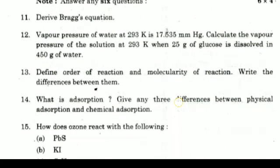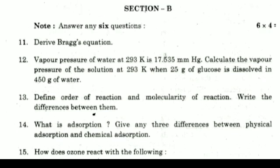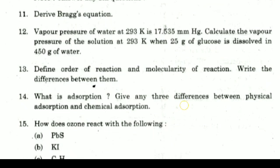Twelfth one: Vapor pressure of water at 293 K is 17.535 mm Hg. Calculate the vapor pressure of the solution at 293 K when 25 grams of glucose is dissolved in 450 grams of water. And thirteenth one: Define order of reaction and molecularity of reaction. Write the differences between them.